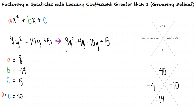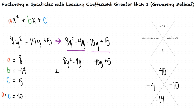Next, we can group the first two terms together and the second two terms together and find greatest common factors for both groups. 8y squared and negative 4y have a common factor of 4y, so we can rewrite this as 4y times 2y minus 1. Negative 10y and 5 have a greatest common factor of negative 5, so we can rewrite this as negative 5 times 2y minus 1.